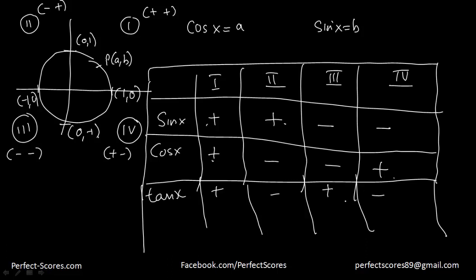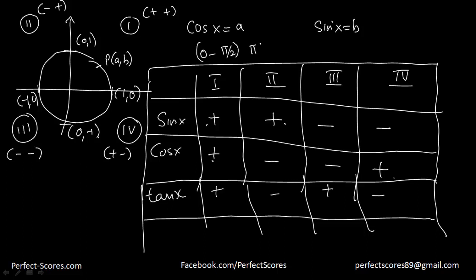Once we have these values, we can easily find the positive and negative nature of cosecant, secant, and cotangent, which are the reciprocals of sine, cosine, and tangent. The first quadrant runs from 0 to pi/2, the second quadrant from pi/2 to pi, the third quadrant from pi to 3pi/2, and the fourth quadrant from 3pi/2 to 2pi.